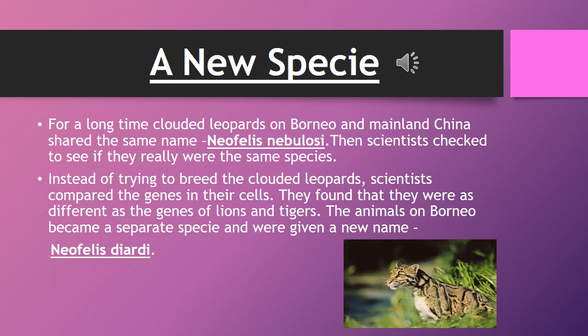A new species. For a long time, the clouded leopard on Borneo and mainland China shared the same name, Neofelis nebulosa. The scientists checked to see if they really were the same species. They compared the genes in the cells and found they were as different as the genes of a lion and tiger. The animals on Borneo became a separate species and were given a new name, Neofelis diardi.